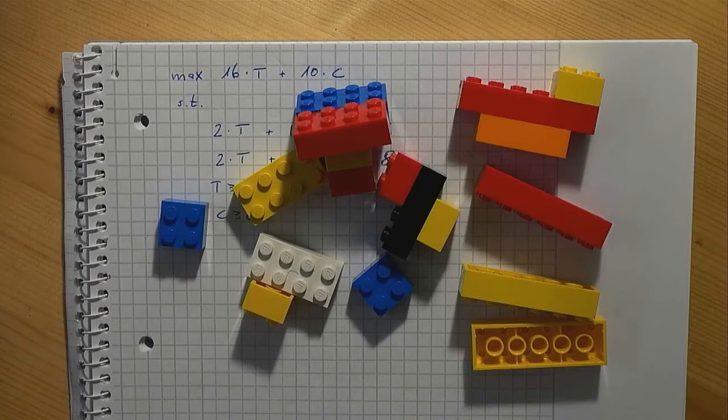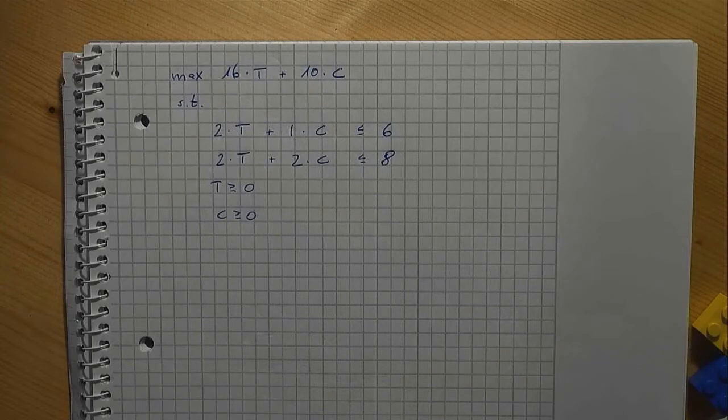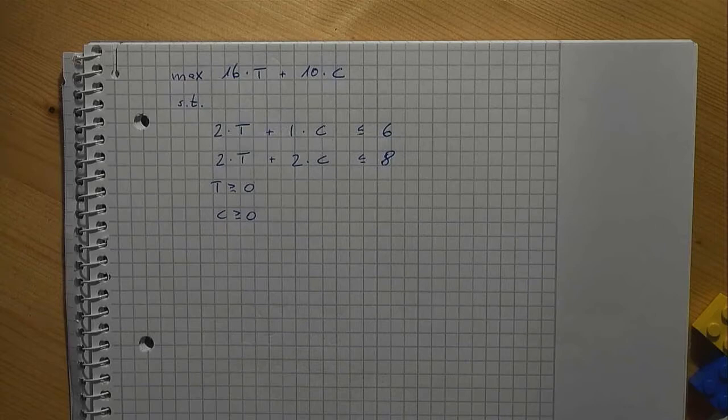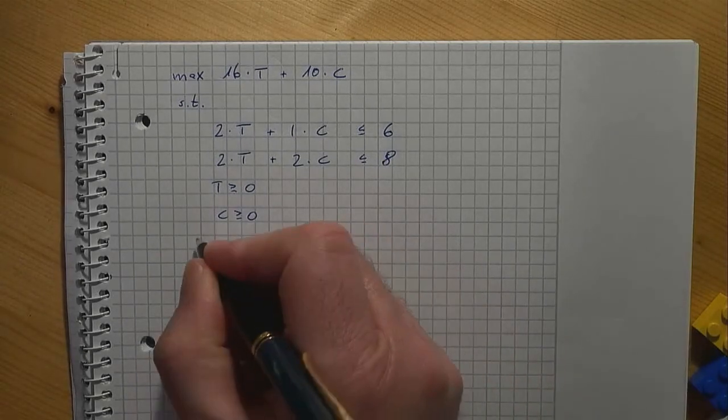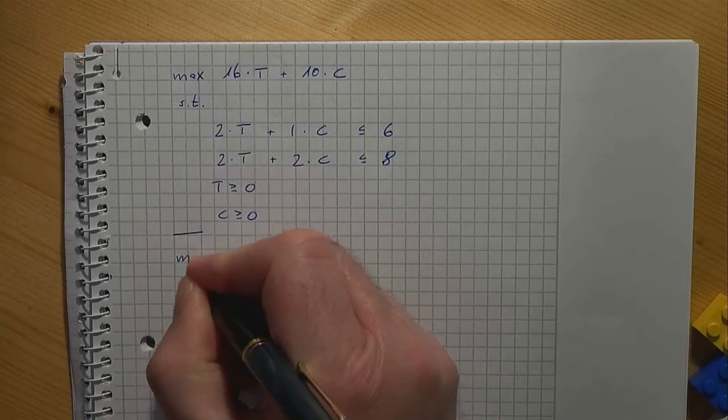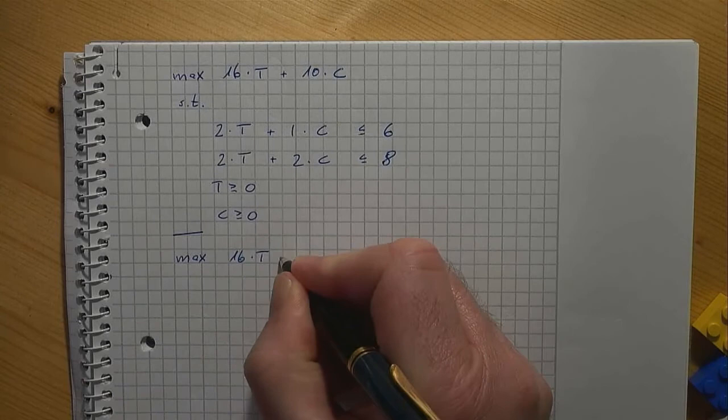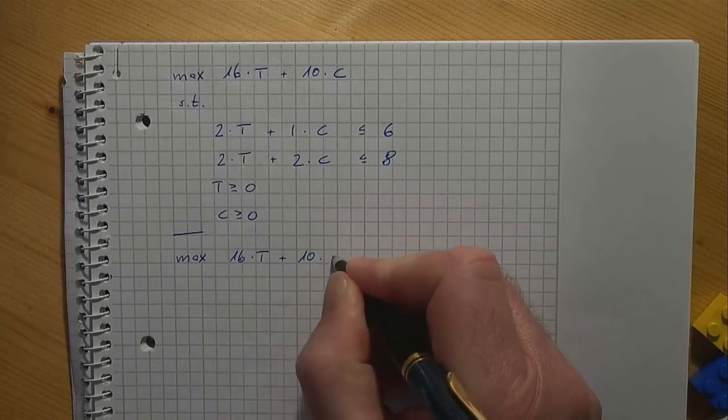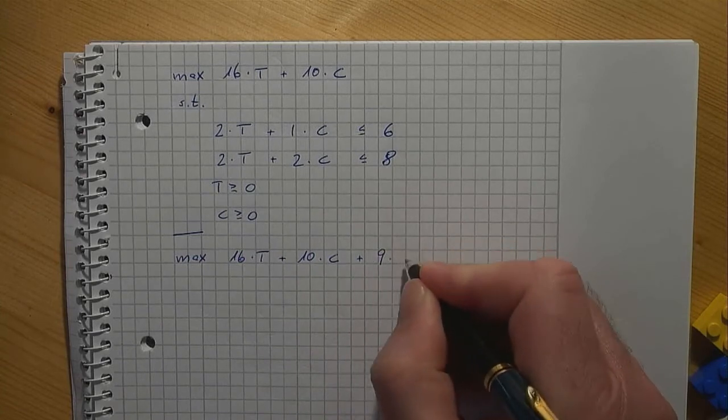Let's have a look at a model formulation for the new situation. The objective function remains to be maximizing the revenue. All we have to do is we have to consider loungers too. Let L denote the number of loungers. Maximize 16 times T plus 10 times C plus 9 times L.